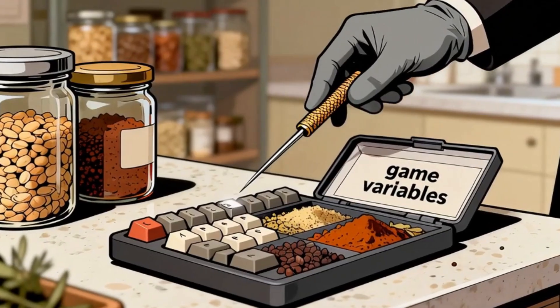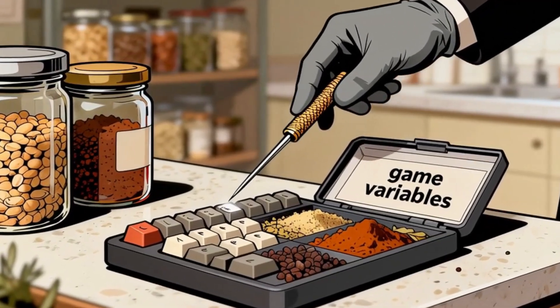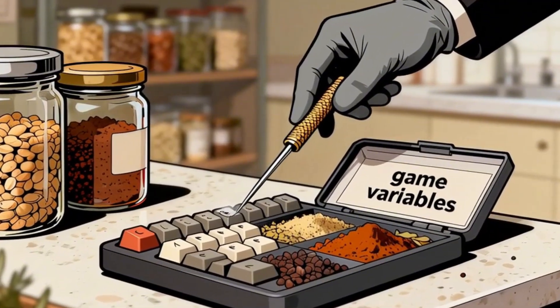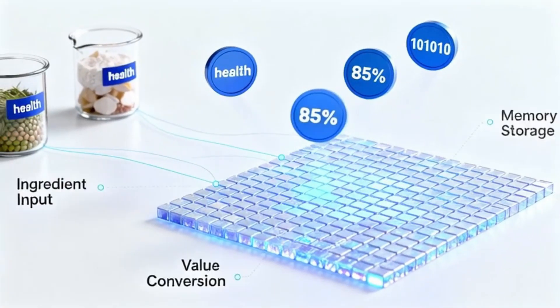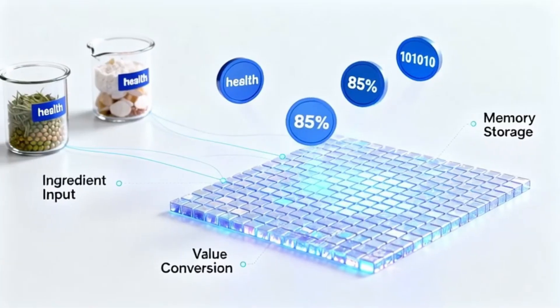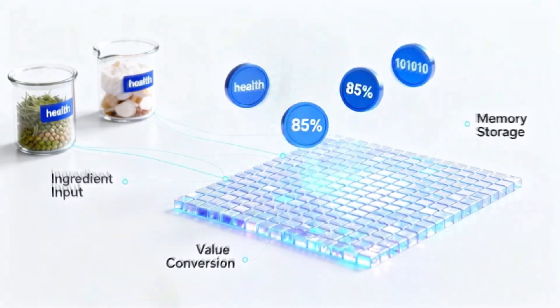The tools don't target the game files in the pantry; they target the live ingredients on the countertop. Now, how is something abstract, like health or score, represented on this digital countertop?